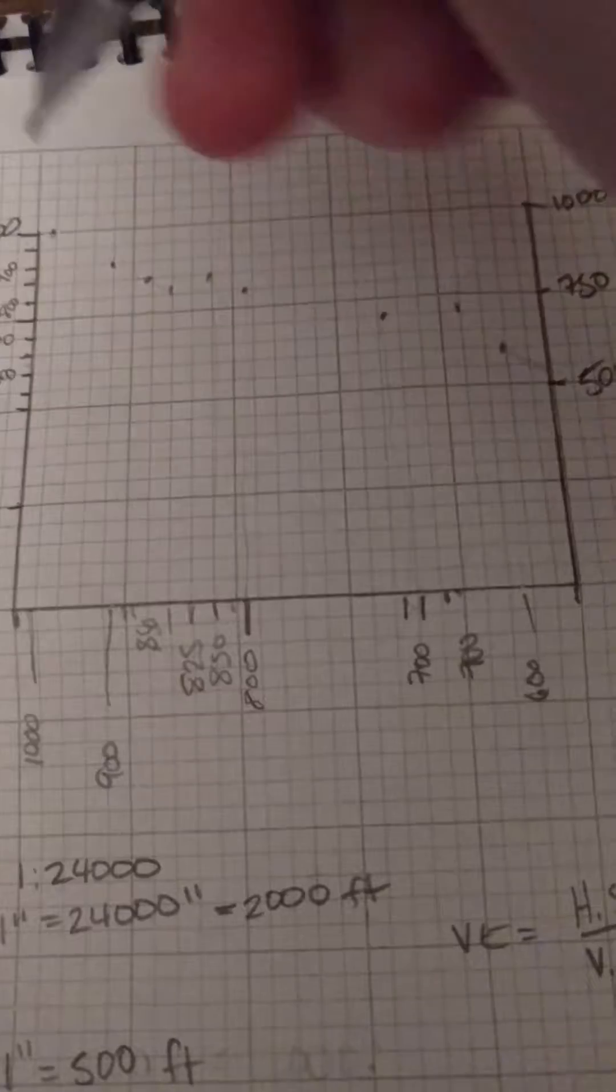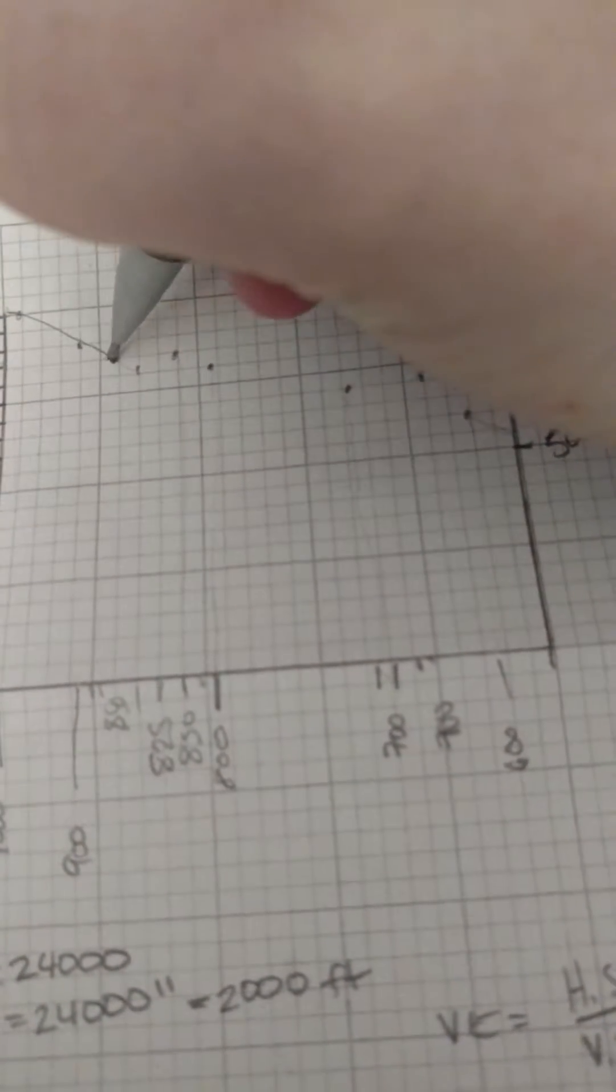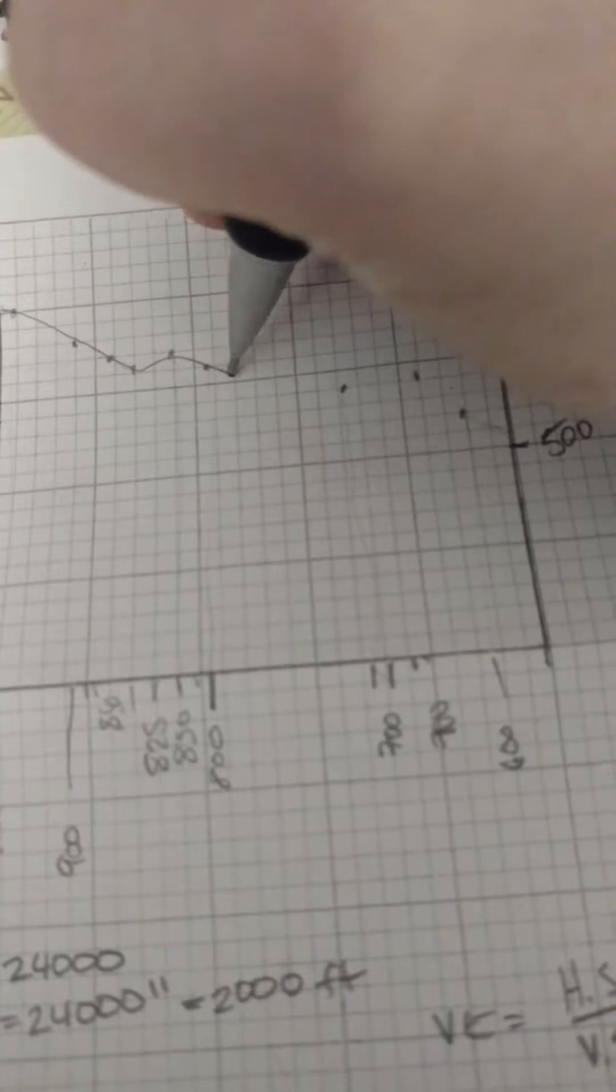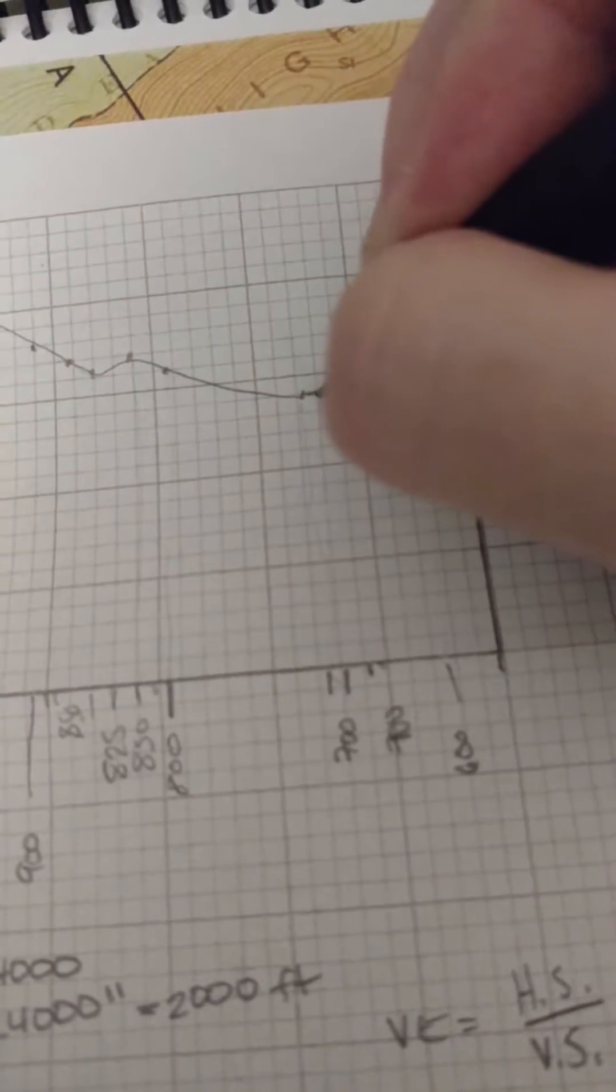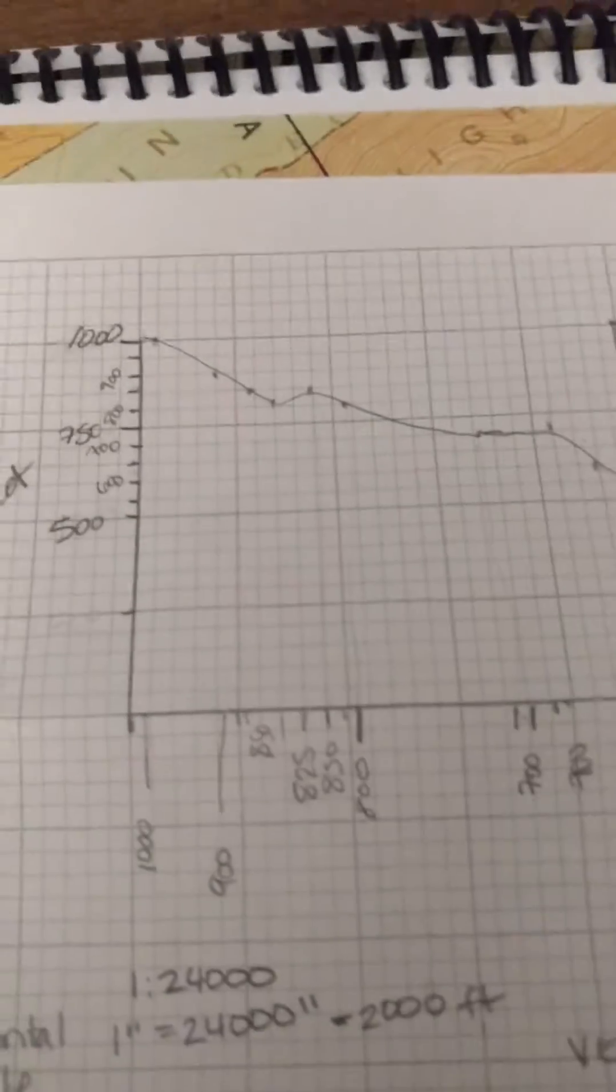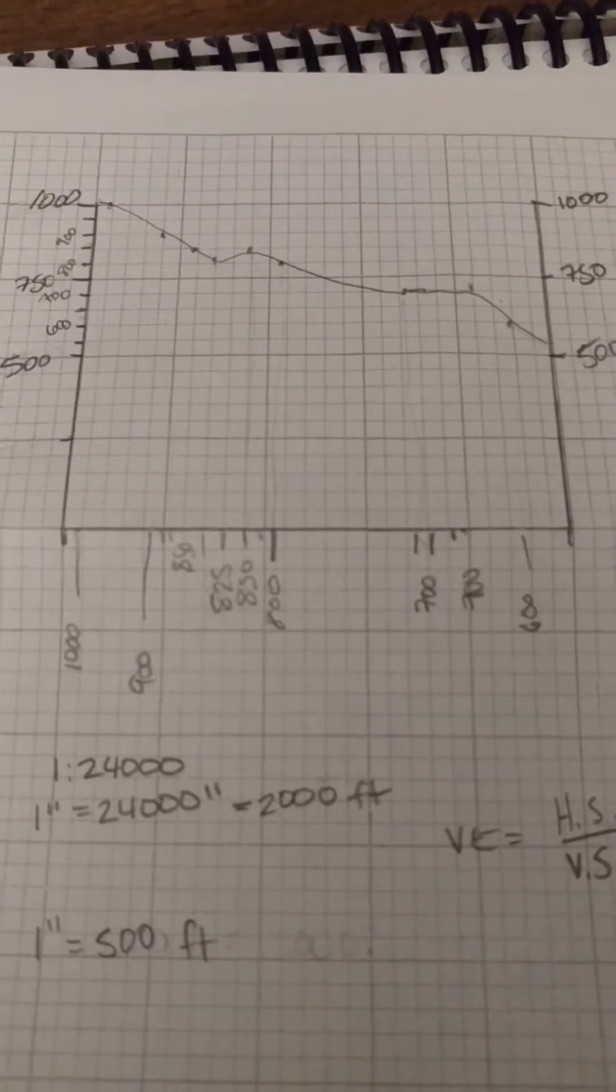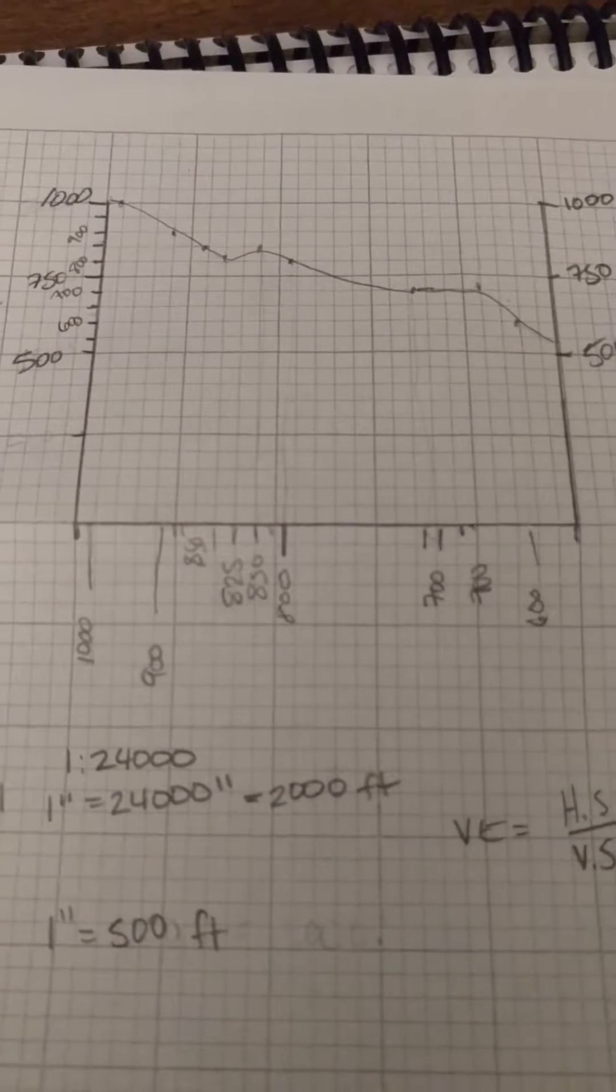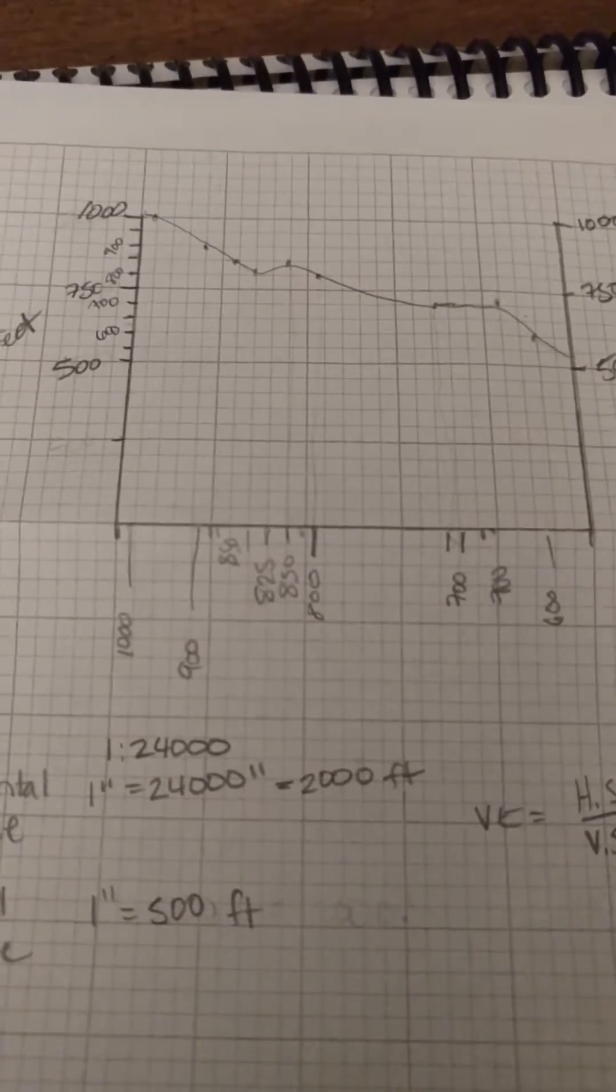So now we'll connect these lines. And notice that they're not perfectly straight, they're kind of rounded. That's how you want to draw it, and this has a lot of vertical exaggeration. So if you were in the field, you wouldn't really see this as a hill.